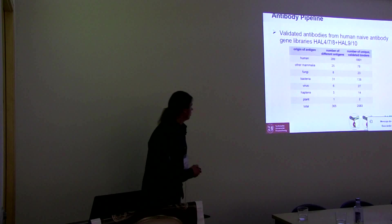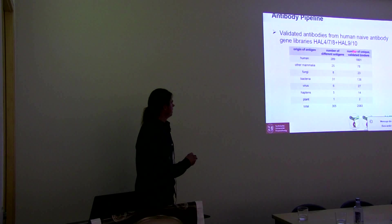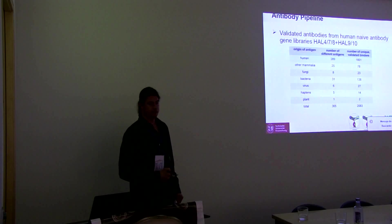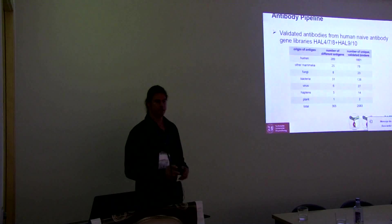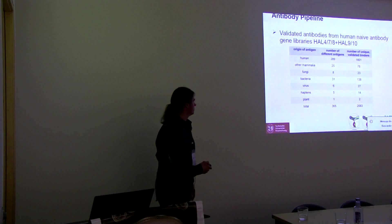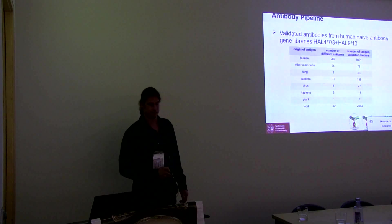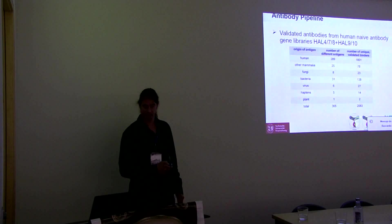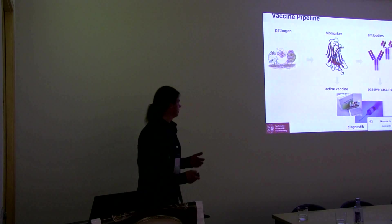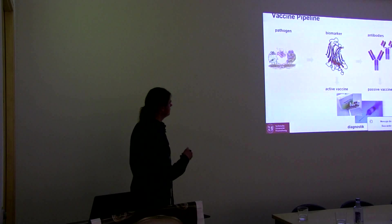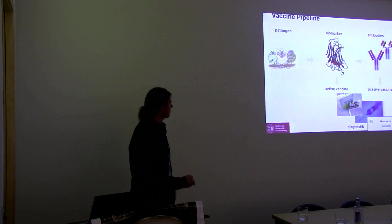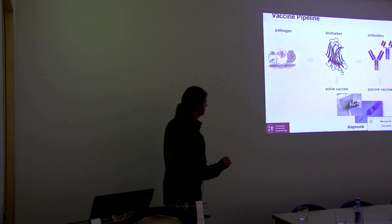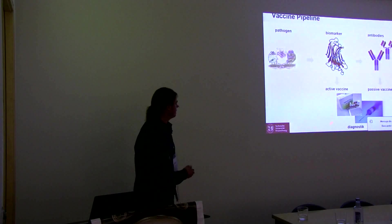We are building the library together with a pharma company partner, and have generated more than 2,000 antibodies against more than 300 different antigens in the last year. These are validated and unique antibodies. So we have a complete vaccine pipeline: starting with pathogens, identifying biomarkers that can potentially be used as active vaccines or for diagnostics, and also generating human antibodies usable as passive vaccines and for diagnostics.